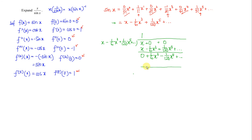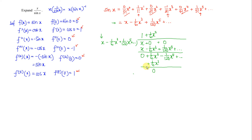Next we need to eliminate the 1 over 6 x cubed term. Since the first term is x, we need to multiply by 1 over 6 x squared, because 1 over 6 x squared times x gives 1 over 6 x cubed. Then 1 over 6 x squared times negative 1 over 6 x cubed gives negative 1 over 36 x to the power of 5. Subtracting: the x cubed terms cancel and we are left with terms involving x to the power of 5.